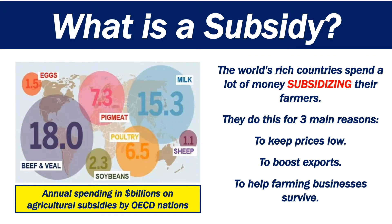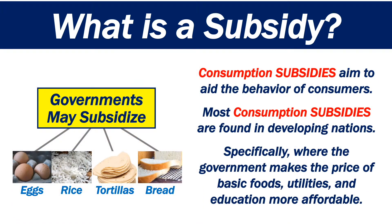OECD nations spend billions every year on agricultural subsidies. Consumption subsidies aim to aid the behaviour of consumers. Most consumption subsidies are found in developing nations, specifically where the government makes the price of basic foods, utilities and education more affordable.